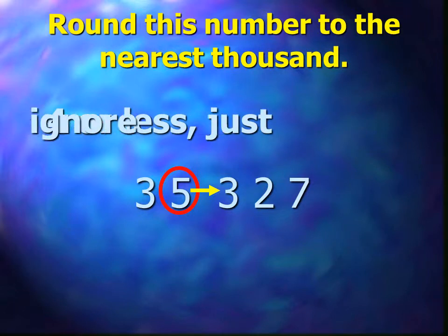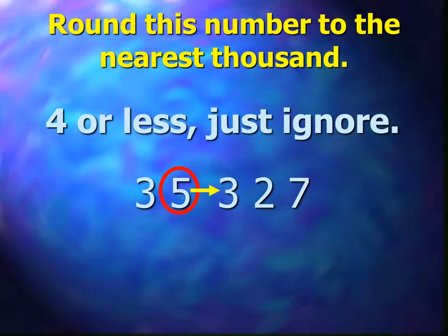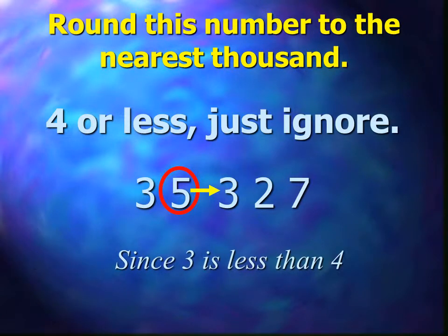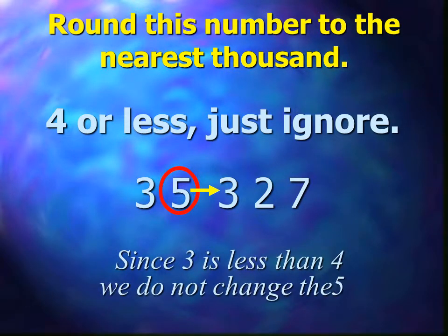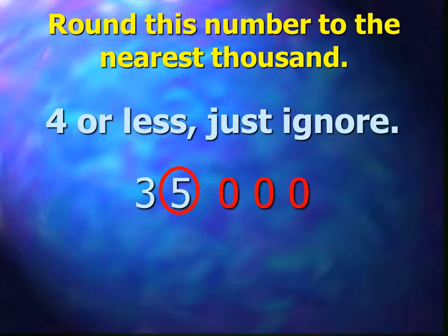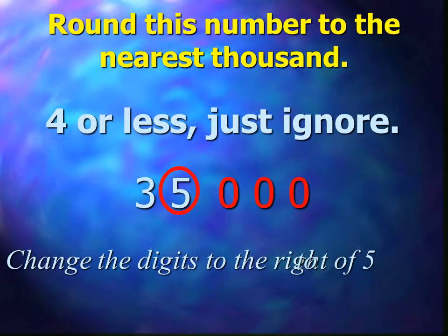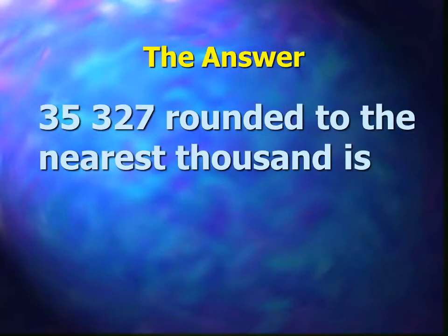Next, is that digit four or less? If so, just ignore. In this case, the three is less than four, so we do not change the digit five. All of the rest of the digits still become zeros to the right of the five. Therefore, 35,327 rounded to the nearest thousand is 35,000.